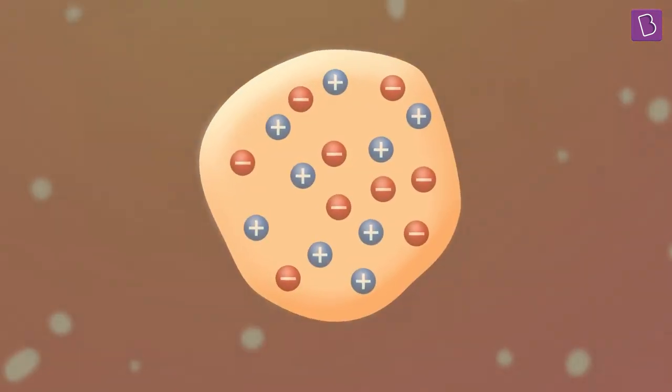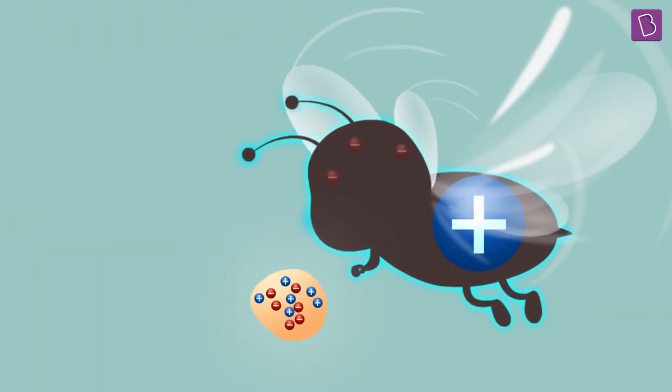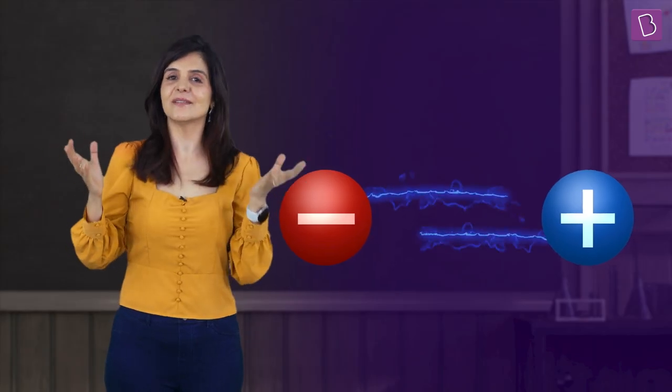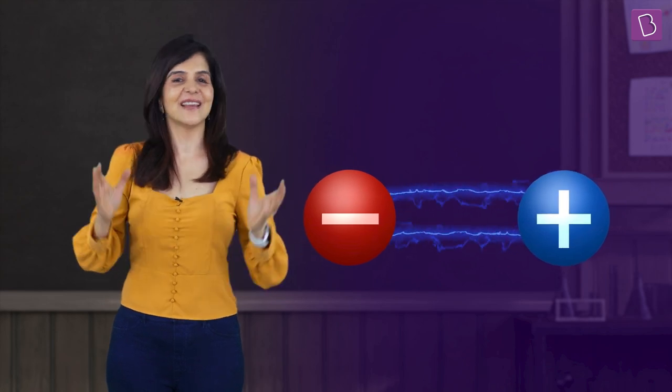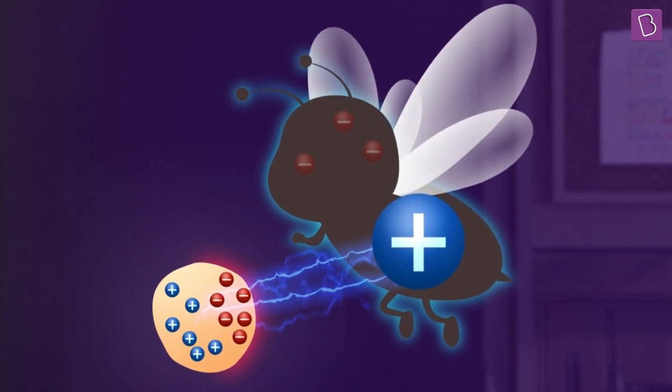A pollen grain is also made up of atoms, just like everything else. When a positively charged bee comes near a pollen grain, the negatively charged electrons in its atoms are attracted to the bee. This is because opposite or unlike electric charges attract each other. But the attraction of the positively charged bee is not strong enough to pull the electrons out of their atoms — some of the electrons just move closer to the bee and accumulate on the pollen grain side closer to the bee.